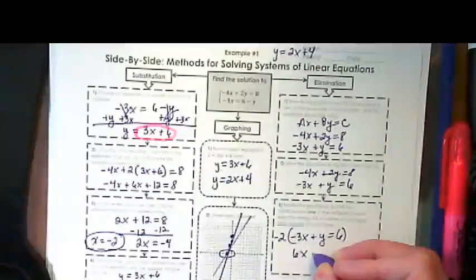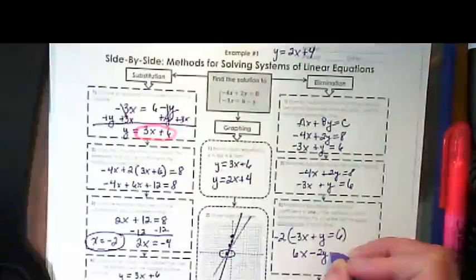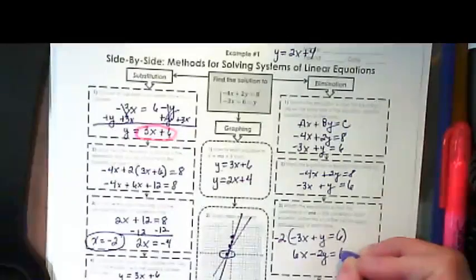We end up with 6x minus 2y equals negative 12.